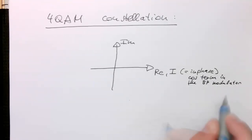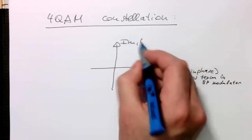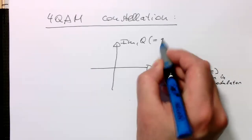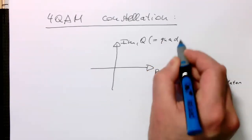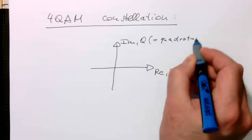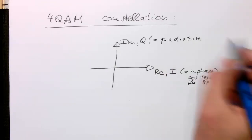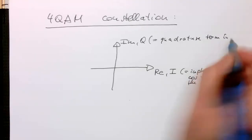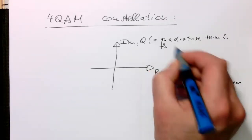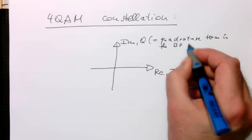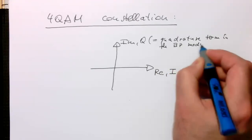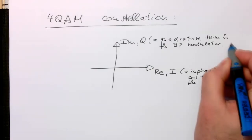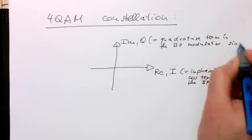And the imaginary is very often called Q, and this means the quadrature term in the bandpass modulator. So this turns into the sine later on.